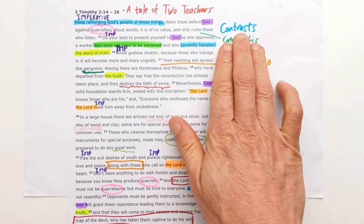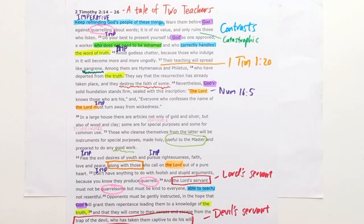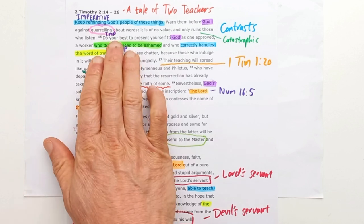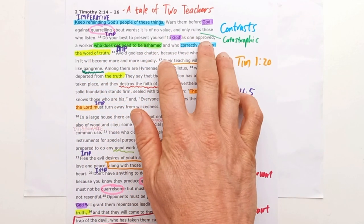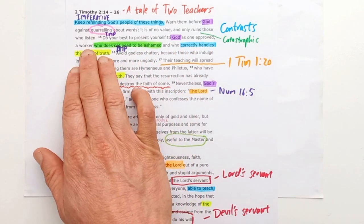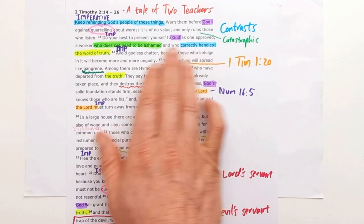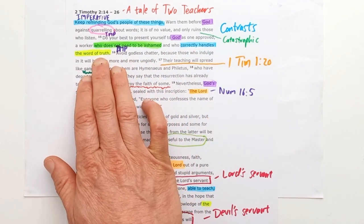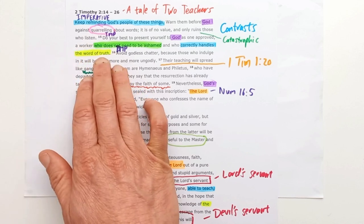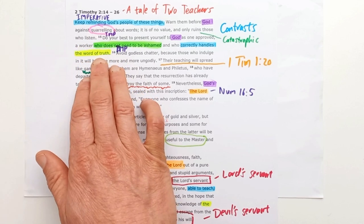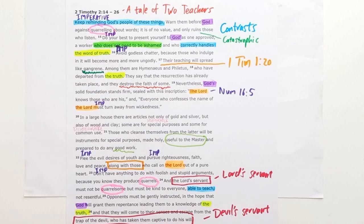These contrasts between the Lord's servant and the devil's servant are very important for us to see. They help us evaluate those who teach in the church even today. We want to make sure that those we listen to are those who, as Paul commands Timothy, present themselves to God as approved — approved because of what Jesus has done — and are hard workers, not ashamed, correctly handling the word of truth as they point people to Jesus. That's what we want to do increasingly, so that others will come to a knowledge of the truth and grow in it, making it to the end still trusting in Jesus the Lord who has saved them.